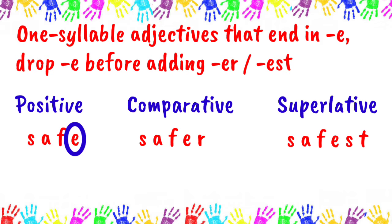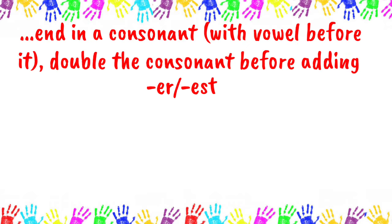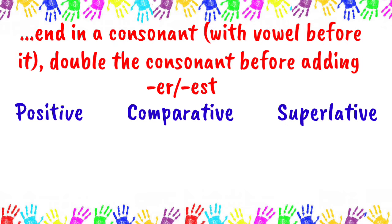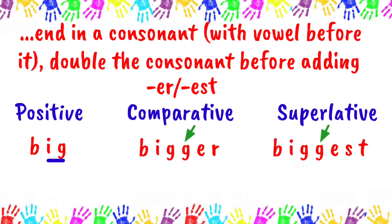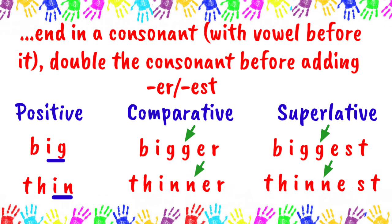For one-syllable adjectives that end in a consonant with a vowel before it, double the consonant before adding ER or EST. Like: big, bigger, biggest; thin, thinner, thinnest.